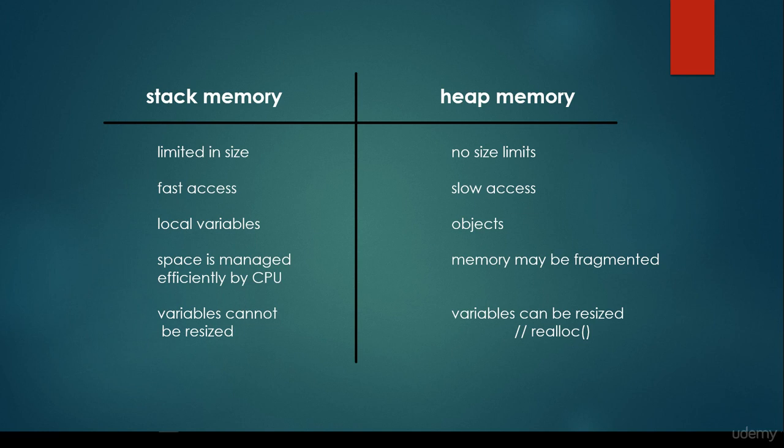For all the programming languages, these memory types are present. Sometimes we don't have to bother about it, for example in Java. We just use local variables, primitive types, we just use objects, we instantiate classes, we use objects, we don't have to bother about it.